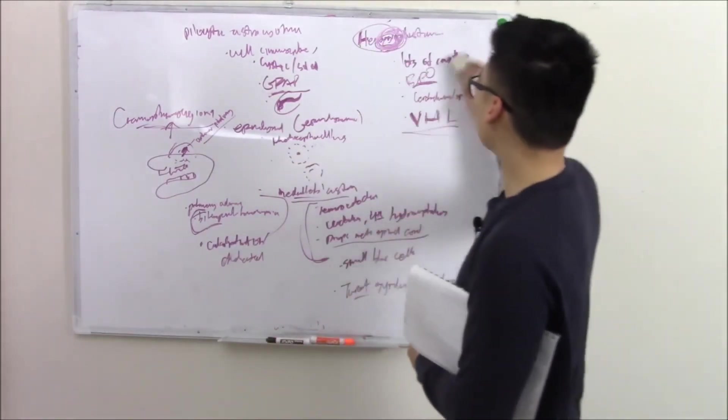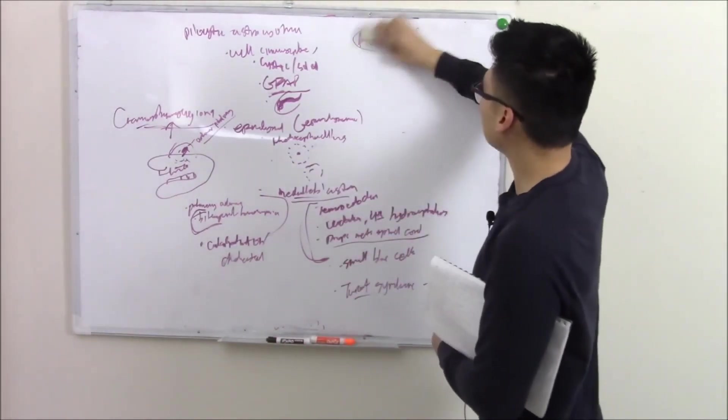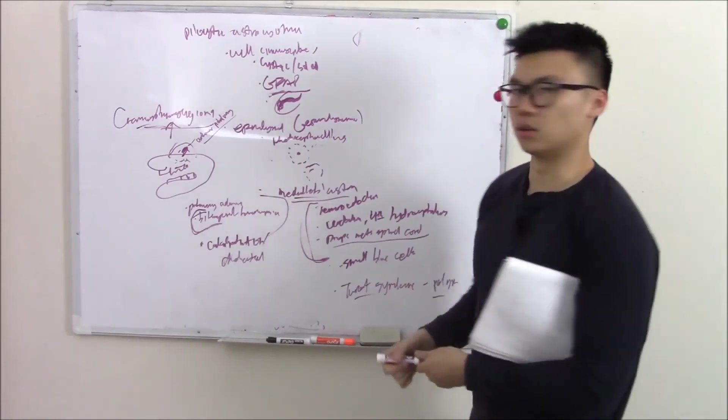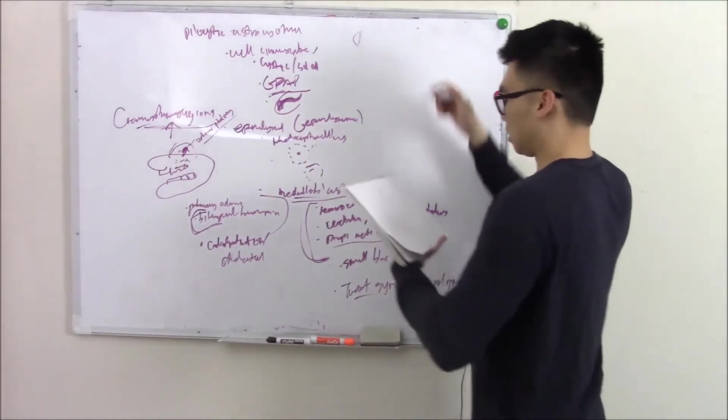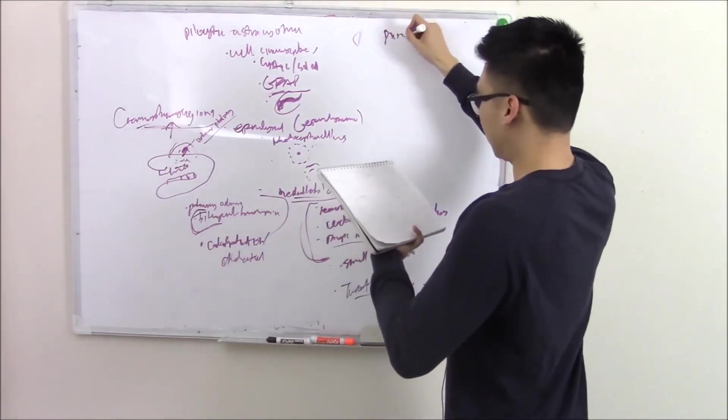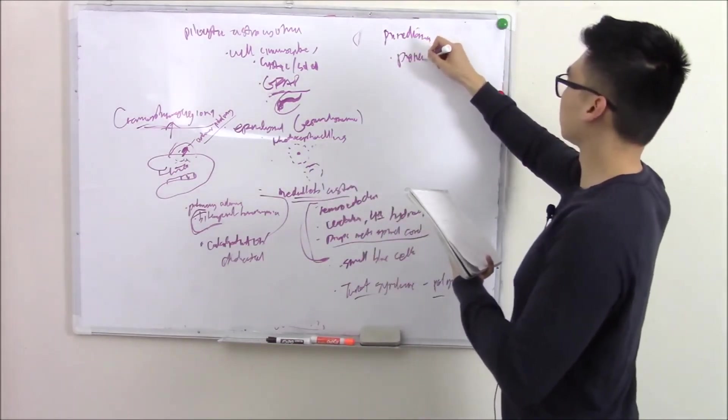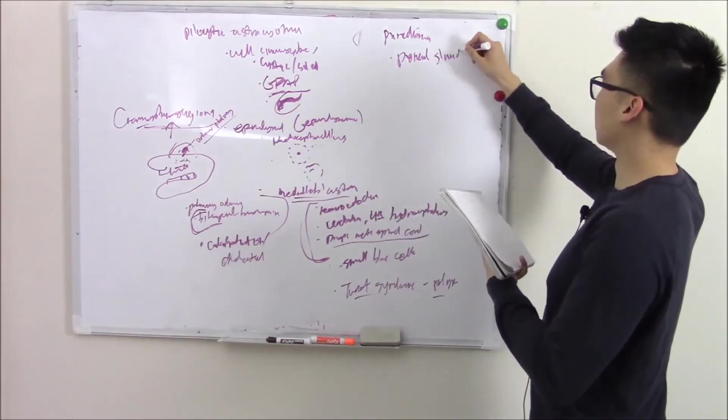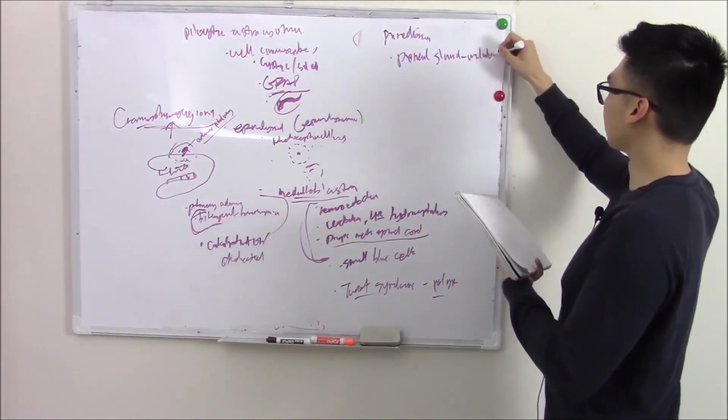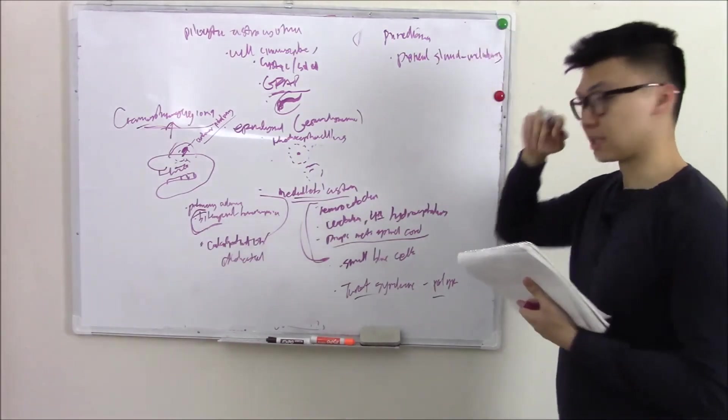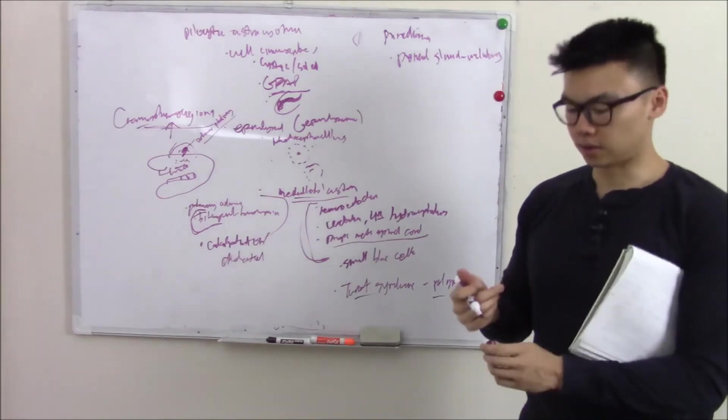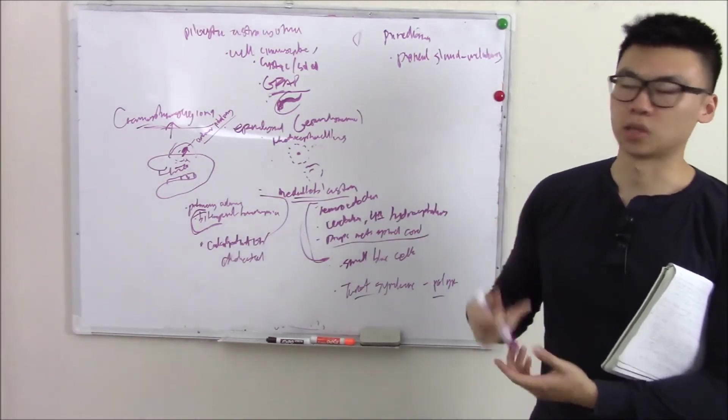So the last one is a pineal gland tumor or pinealoma. Your pineal gland is this very small gland that makes melatonin. And we like melatonin. Melatonin is what helps us to sleep. Sometimes you can buy melatonin over the counter. If you have trouble sleeping, you can take that. It helps you sleep.